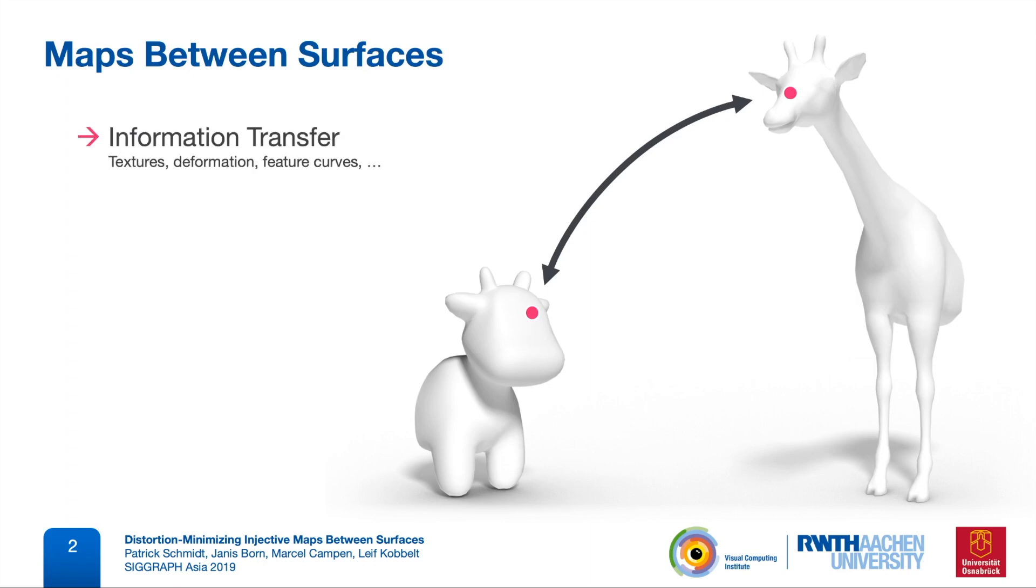A lot of applications rely on such maps. Just to name a few, there is information transfer, we can transfer a texture, a deformation, other surface properties. There is shape coprocessing, think of mutual remeshing or computing corresponding crossfields or quad meshes. There is template embedding and a lot more.